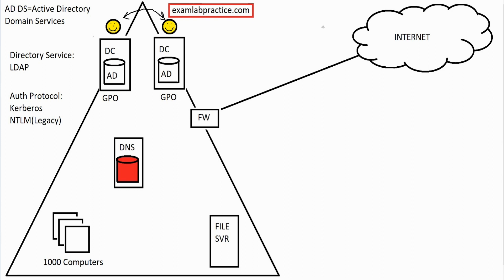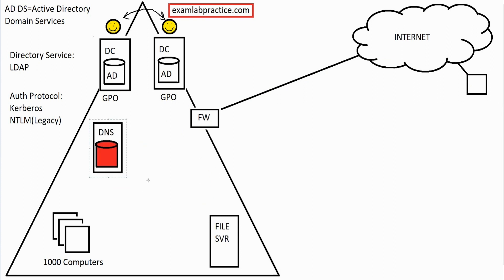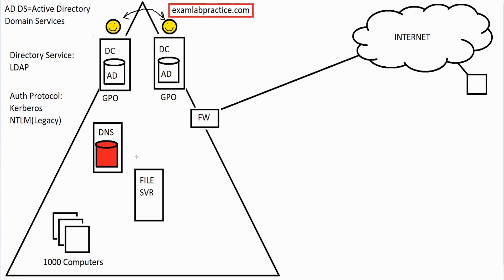Let's talk about the scenario of what happens when a user is not at the office — working from home, which is very common now. This person needs the ability to connect in and access services that are inside the network. Companies in the past had this mindset of hosting everything themselves — file servers, SQL database servers, Microsoft Exchange for email, and SharePoint. Users working from home need to access all of these services.